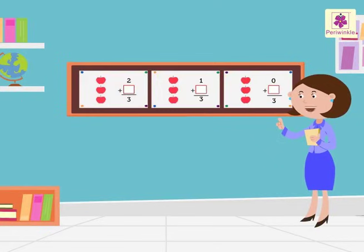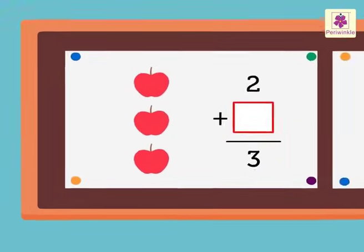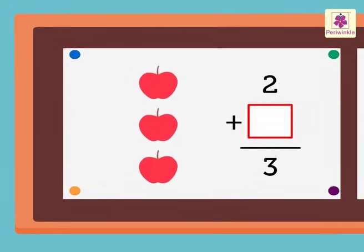Look at this chart. There are apples on it. Can you see some additions next to it? One addend and the sum are given. The second addend is missing. Let us find out the missing addend.